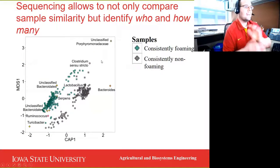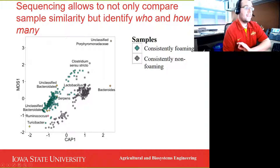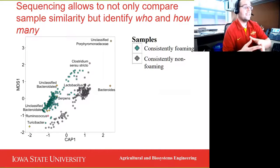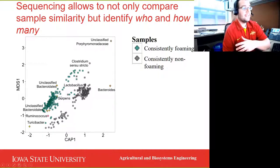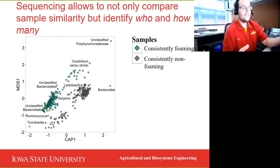So now the fun part — time for the data. We looked at the microbial community graph earlier, and this graph is essentially showing the same thing. The axes are non-dimensional, but two points that are close together would tend to have microbial communities that are very similar, both in the types of bacteria present as well as the amount of each type. Points that are further apart would tend to be much more different. Those green shapes represent consistently foaming barns. The gray circles represent consistently non-foaming barns. Foaming barns tend to cluster in one area, non-foaming barns tend to cluster somewhere else, meaning there are differences in the microbial community.